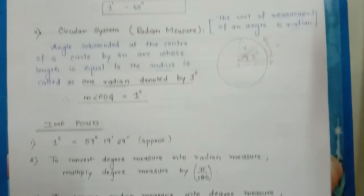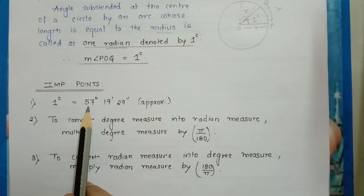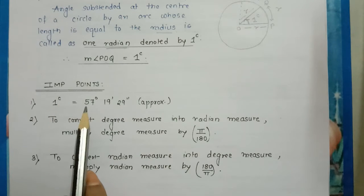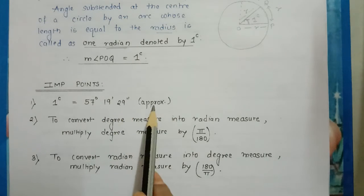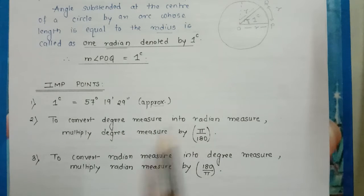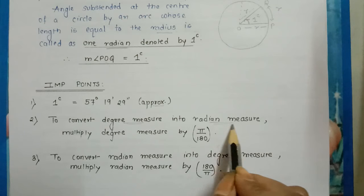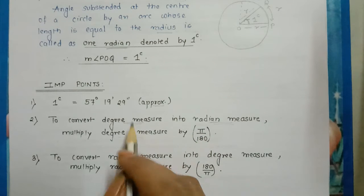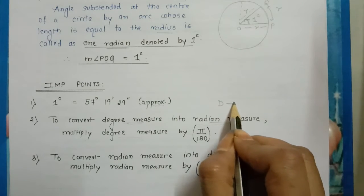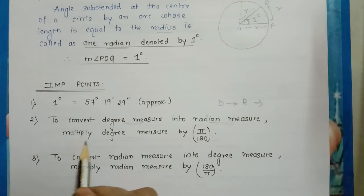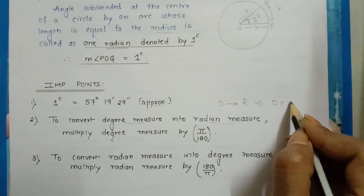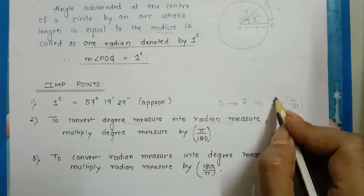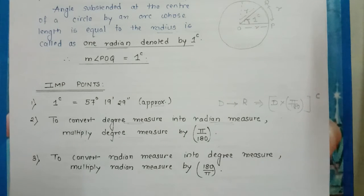Now let's see the important points. The value of one radian is approximately 57 degrees 90 minutes 29 seconds. To convert degree measure into radian measure, multiply the given degree value by pi by 180. This will convert the degree to radian — the radian symbol should appear in the answer.